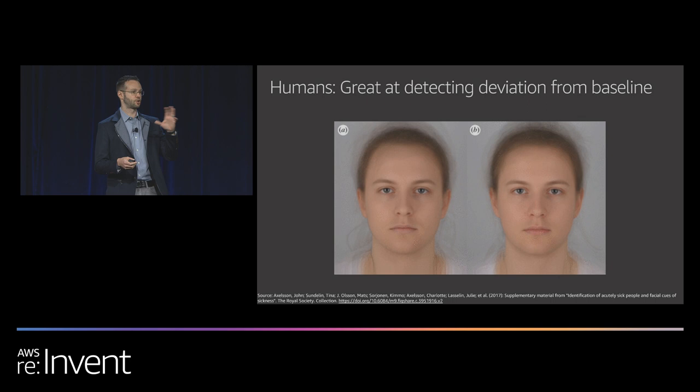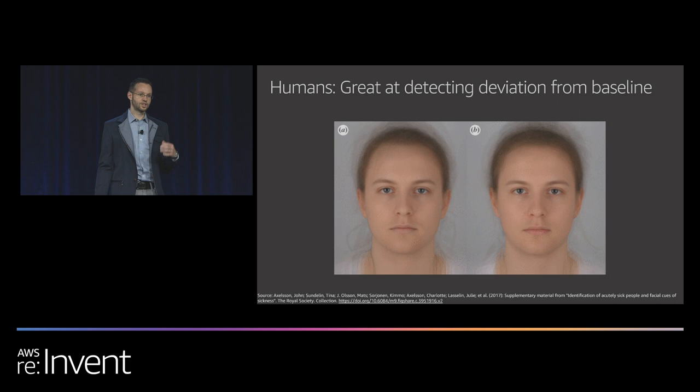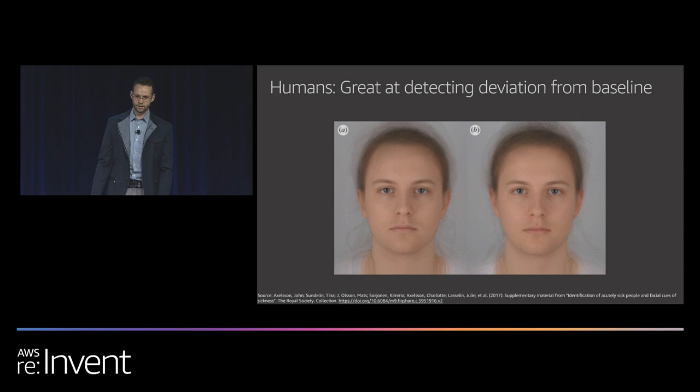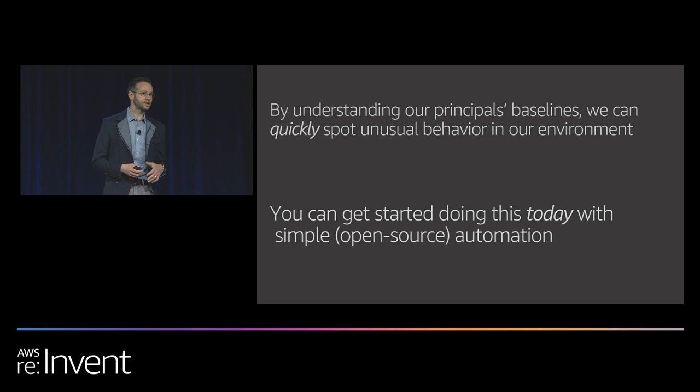The reason we're able to do this very well is because we have a baseline — from the time we grew up, we know what a human face is supposed to look like, and then we can see when something's a little bit off. In particular for this picture, something's a little bit off from the baseline, the normal.